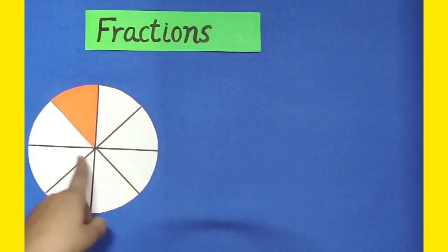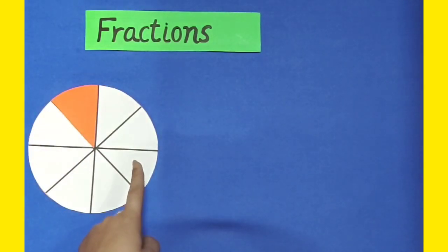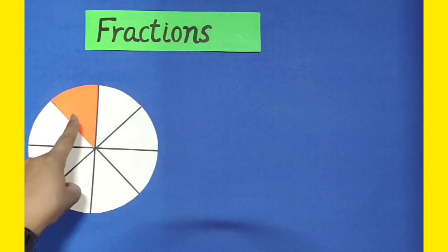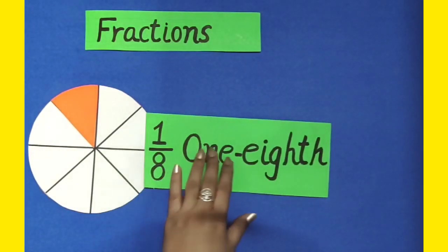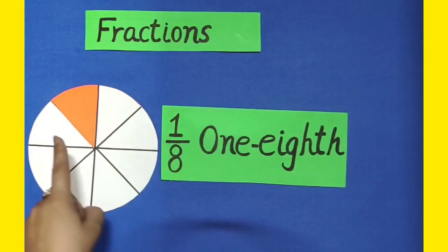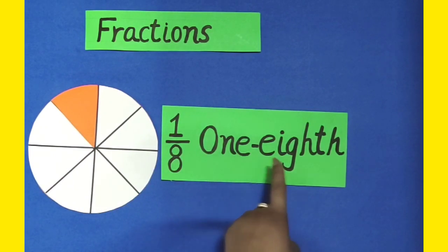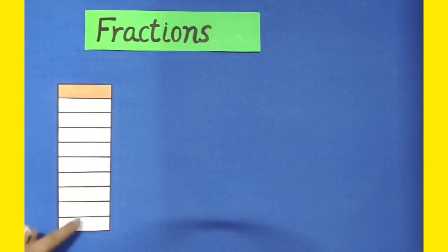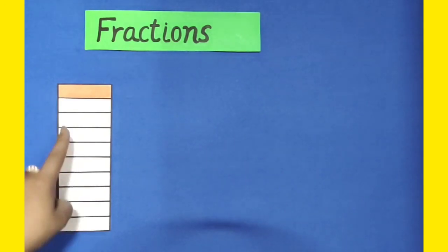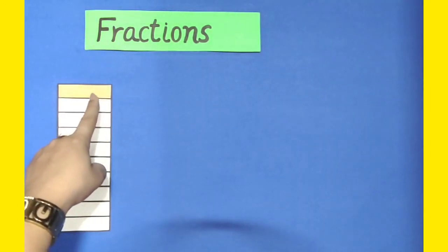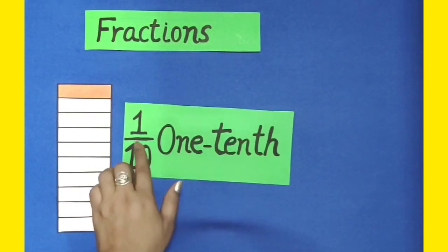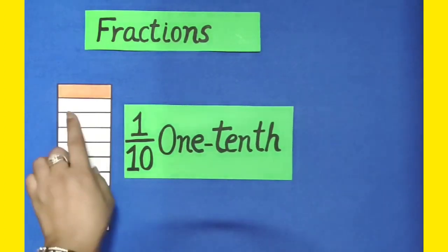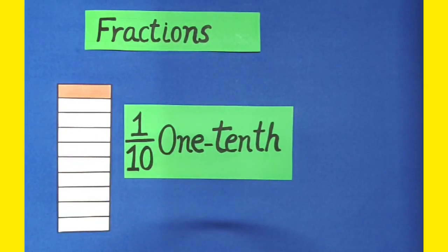In this figure, out of 8 equal parts, one of the parts is colourful. So its fraction form will be 1 by 8, and in words it can be written as 1 eighth. In this figure, out of 10 equal parts, one part is colourful. So its fraction form will be 1 by 10, and in words it can be written as 1 tenth.